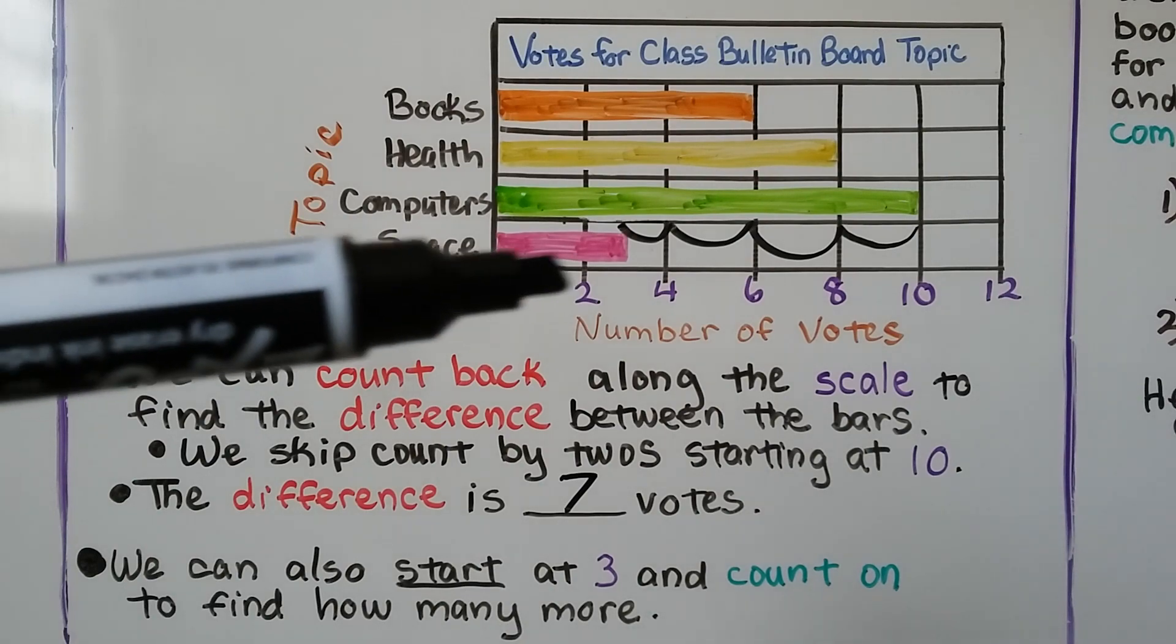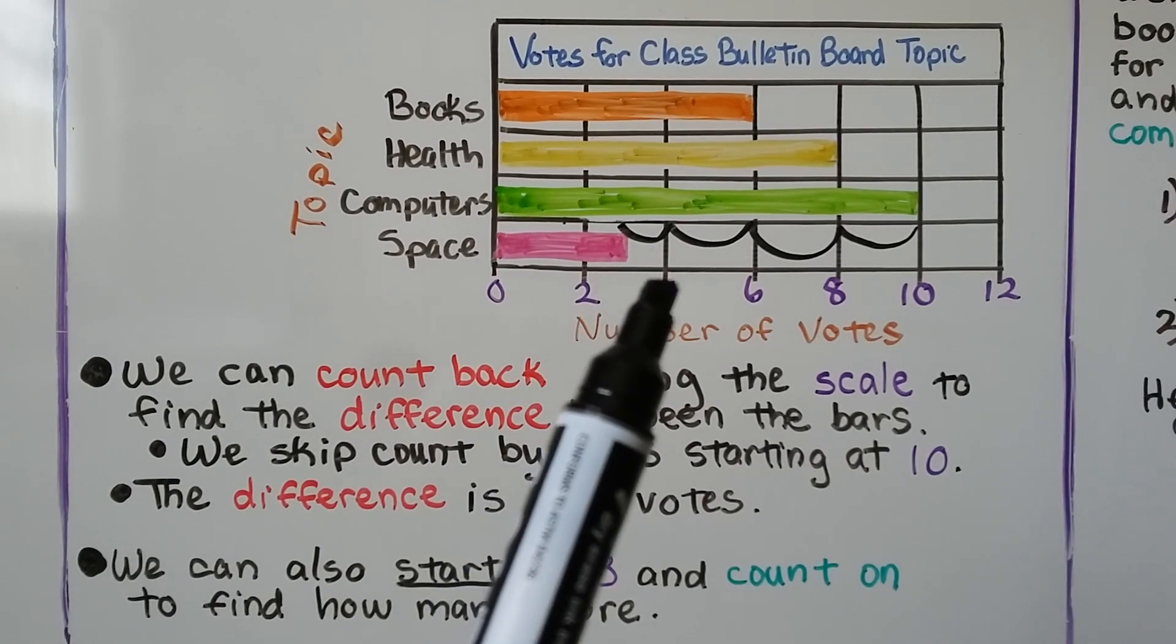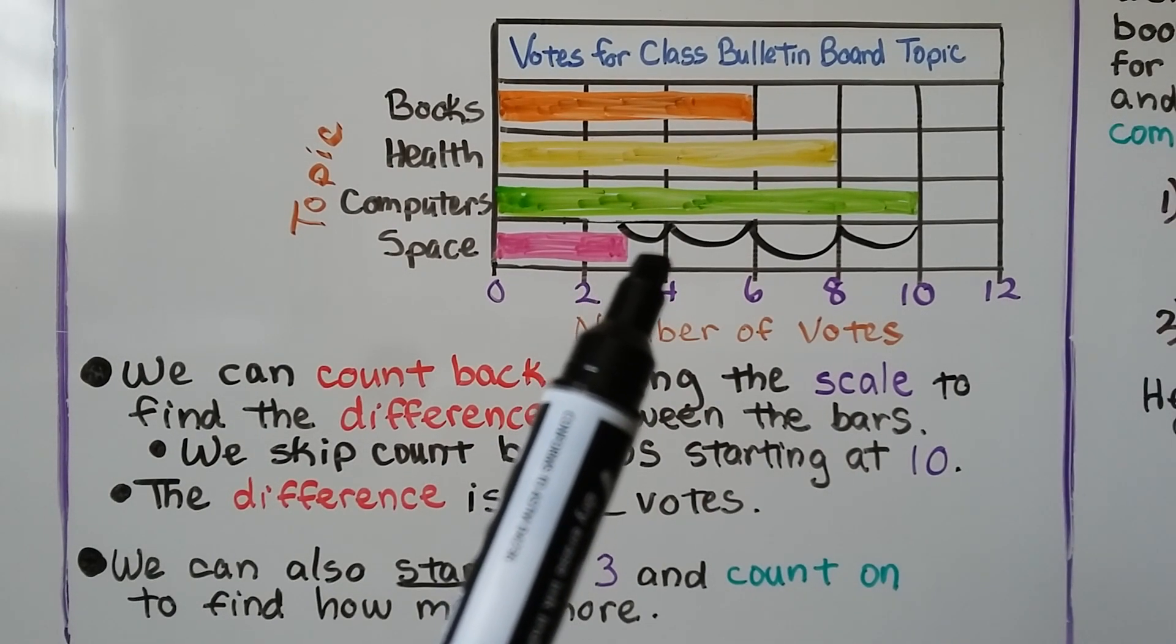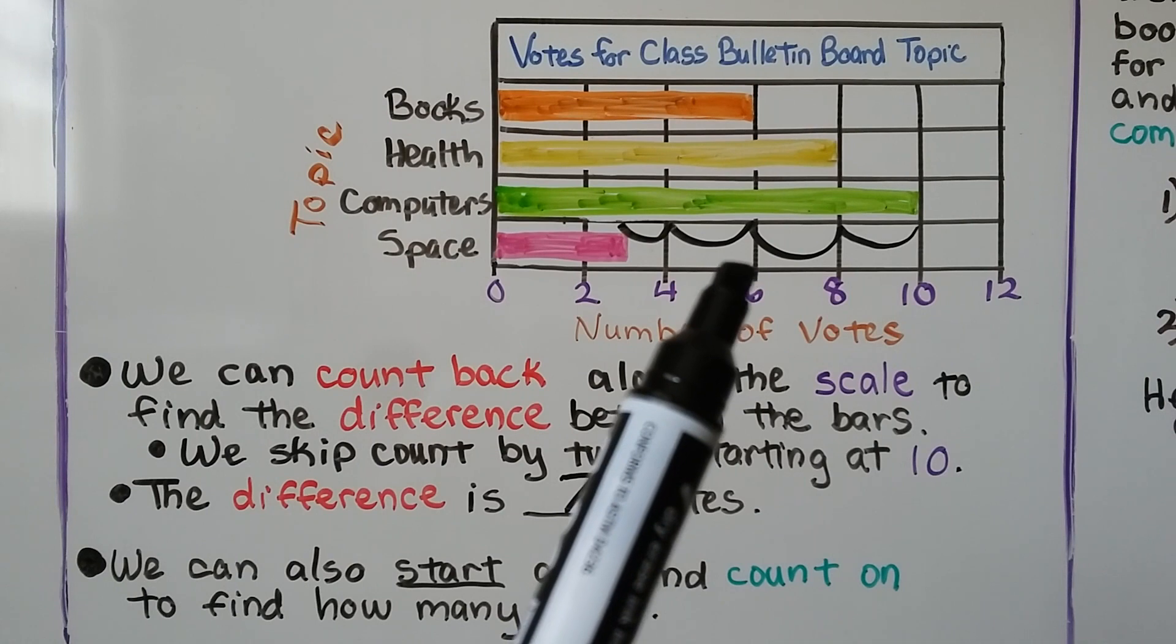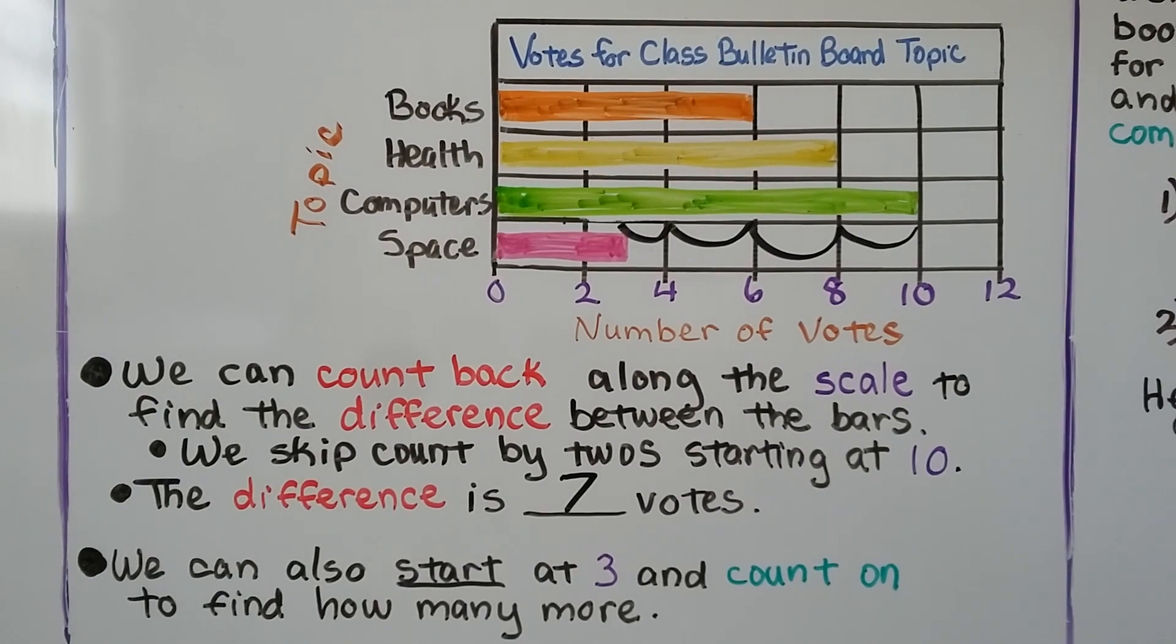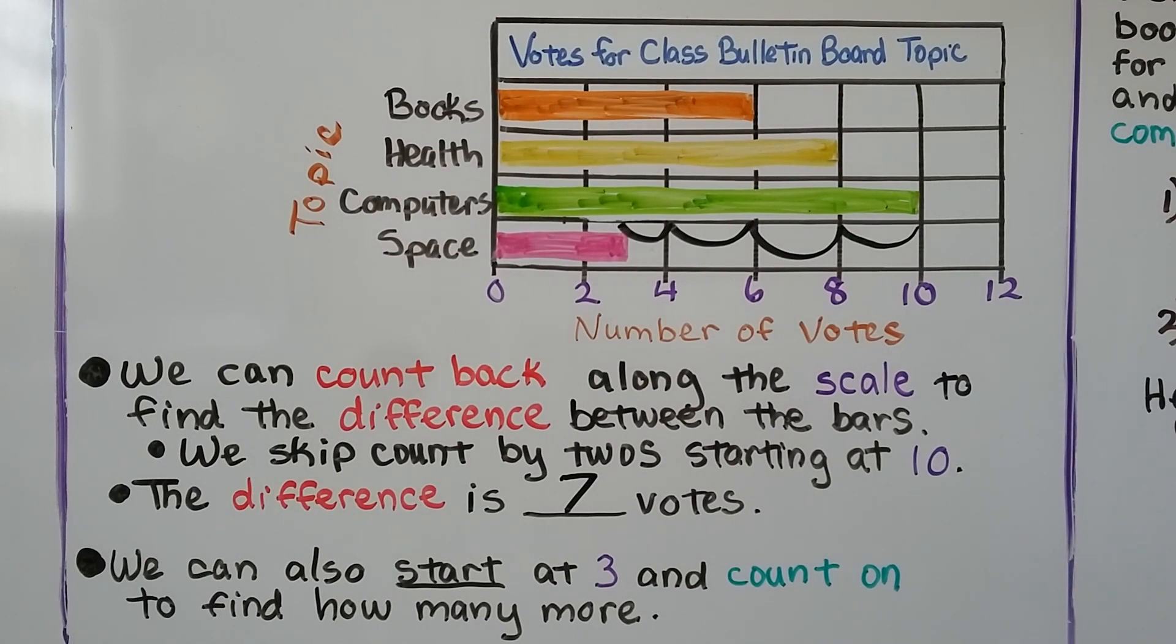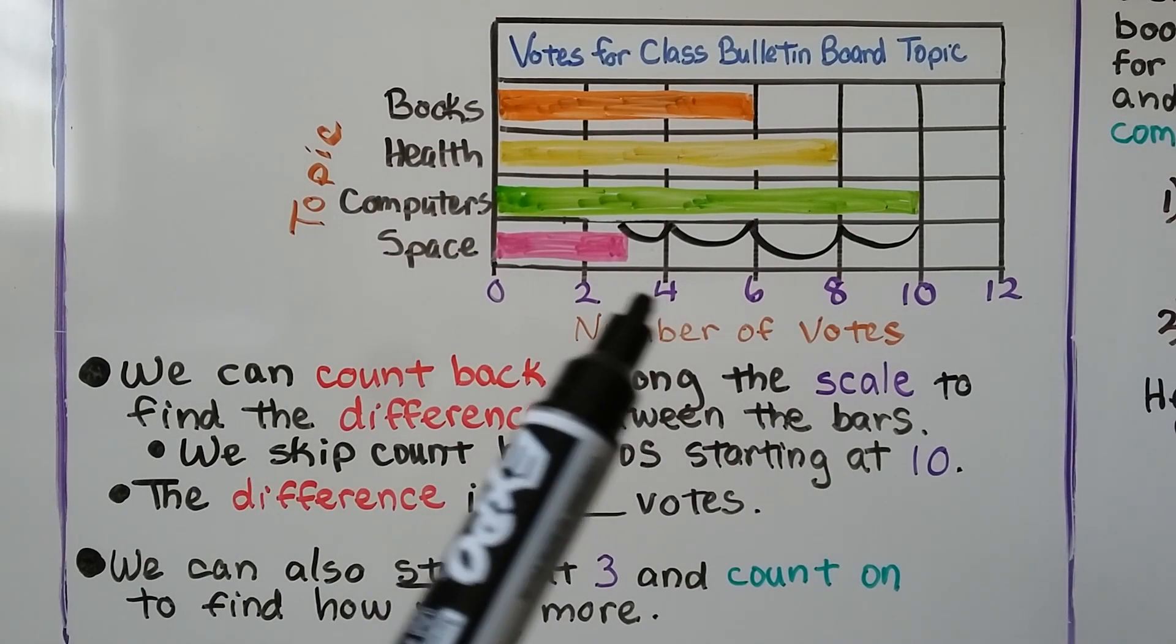We could also start at the three for space and count on to find how many more. Three and going to four would be one, plus two more is three, and two more is five, and two more is seven. But it's a lot easier to skip count coming back, isn't it? And then adding the one more between the four and the three.